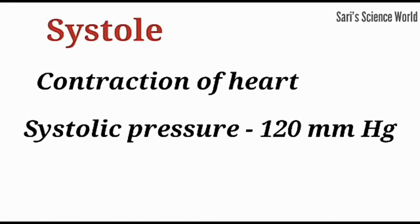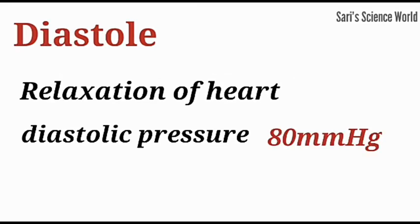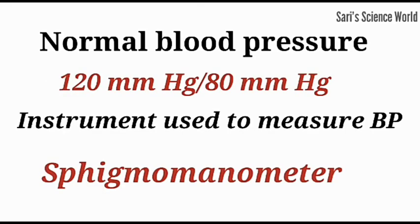The contraction of the heart is known as systole, with a systolic pressure of 120 mmHg. The relaxation of the heart muscles is called diastole, with a diastolic pressure of 80 mmHg. The normal blood pressure of a person is 120 mmHg over 80 mmHg. The instrument used to measure blood pressure is the sphygmomanometer.